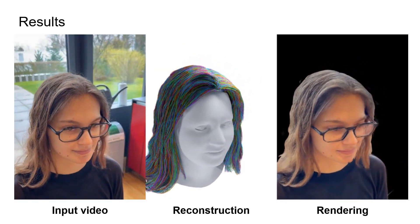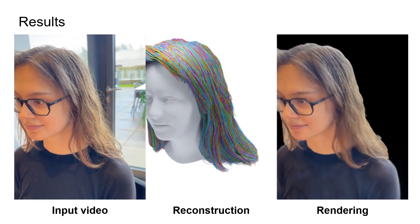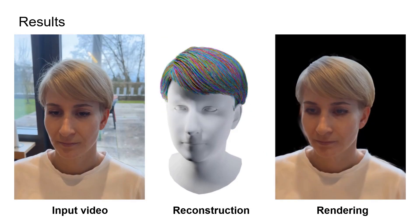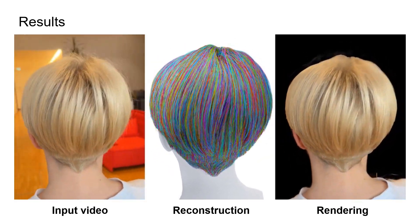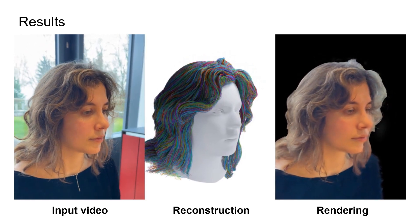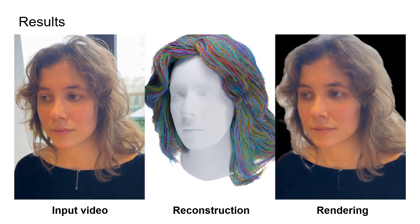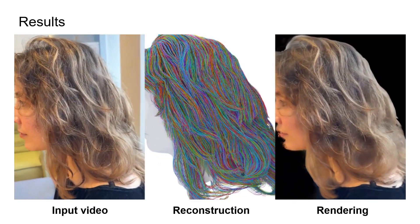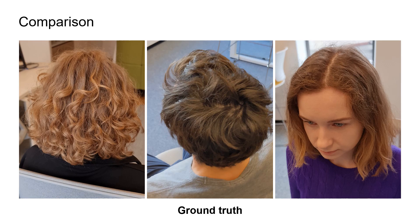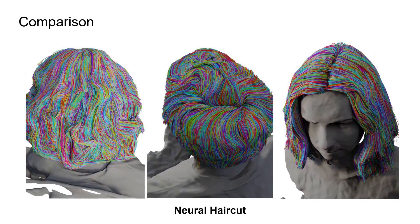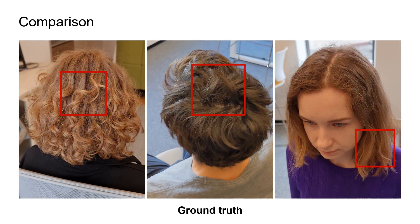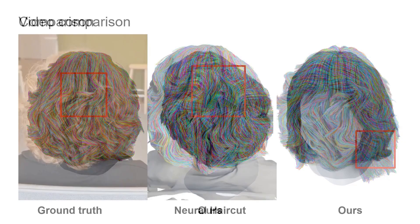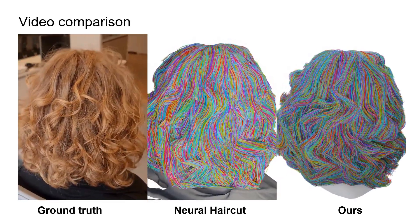Our method achieves a high level of photorealism characteristic of the 3D Gaussian splatting approach, but instead utilizes strand-based geometry. We compare our approach with Neural Haircut, a recent state-of-the-art method for multi-view hair reconstruction. We observe that our method achieves higher accuracy in the reconstructed geometry of the hair strands, and also outperforms Neural Haircut by more than 10 times in optimization speed. We also provide a side-by-side video comparison.